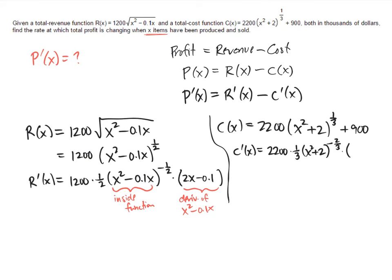And then I multiply by the derivative of the inside function, which is 2x. 900, the derivative of 900 all by itself, that's a constant, so the derivative of 900 is 0.